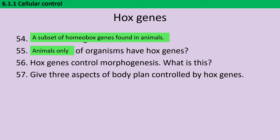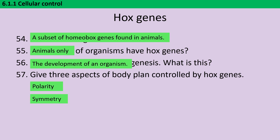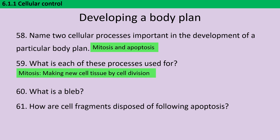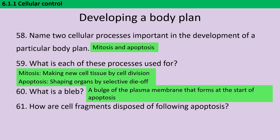Morphogenesis is the proper name for the development of an organism, covering the polarity, symmetry, and number and location of any appendages such as legs, arms and antennae. When an embryo is developing, we see both mitosis and apoptosis — mitosis is necessary to make new cell tissue by cell division, while apoptosis or cell death is how we shape the organs by selective die-off. A bleb is a bulge of the plasma membrane that starts to form at the start of apoptosis, and once cell death occurs, the cell fragments are absorbed by phagocytosis.